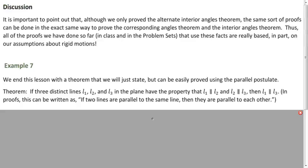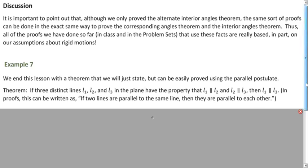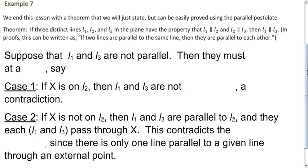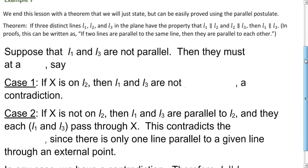Now that we have the parallel postulate, we can prove many other facts using parallel lines. Here's one: if line L1 is parallel to L2, and L2 is parallel to L3, and they're all in the same plane, then L1 is parallel to L3. Think about how you might prove that. We'll prove it by contradiction.